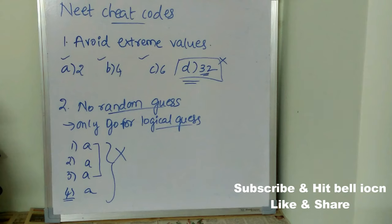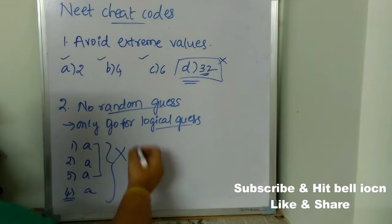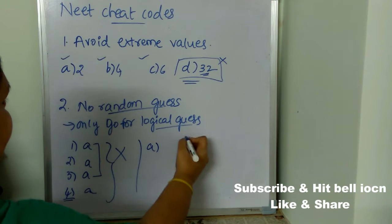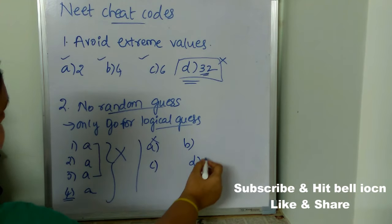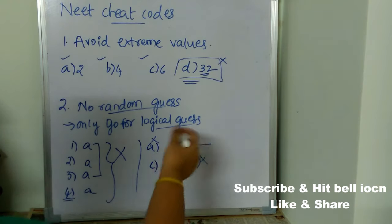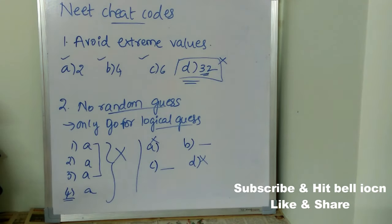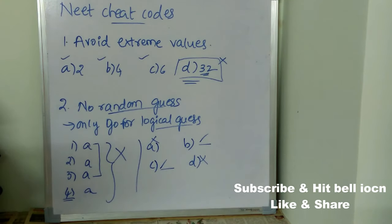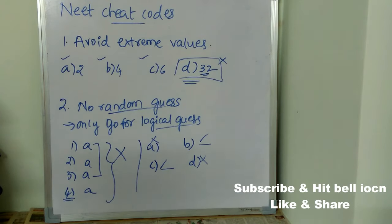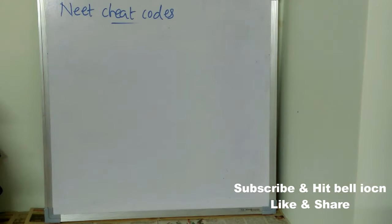Now, what is a logical guess? Logical guess means if there are four options and you are confident that A is not correct, and you are only confused between B and C, then use your logic to choose between B or C. This is called logical guess, and it is okay to follow. Random guess is completely wrong and you should not follow it.